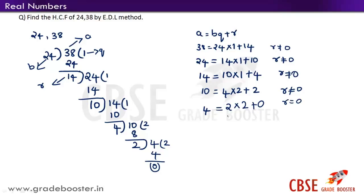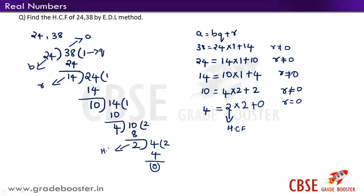Here r = 0. As per Euclid's division algorithm, if the remainder is equal to 0 then b is the HCF. In this case b is 2, so 2 is the HCF. We can mark it in the division as well. Therefore, the HCF of 24 and 38 is 2, which we found by following Euclid's division algorithm.